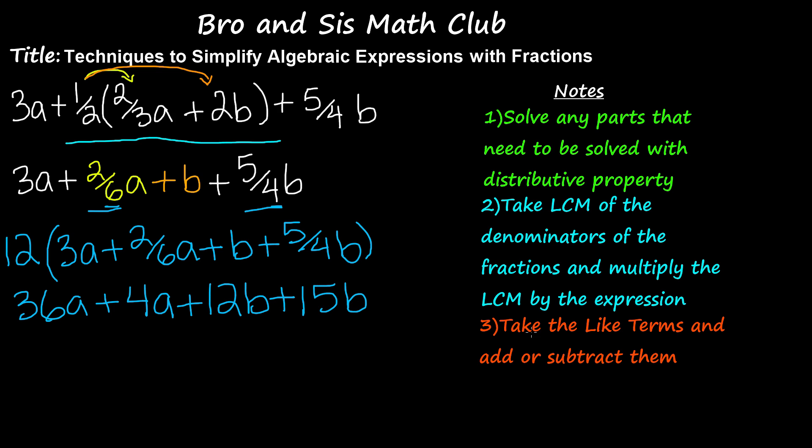The final step is to take the like terms and add or subtract them to get your simplified algebraic expression. 36A and 4A are like terms. The reason is because 36A and 4A share the same variable, which is A and A, and the same power of the variable, which is 1 and 1. So 36A plus 4A is equal to 40A.